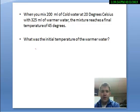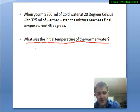Okay, when you mix 200 milliliters of cold water at 20 degrees Celsius with 325 milliliters of warmer water, the mixture reaches a final temperature of 45 degrees. What was the initial temperature of the warm water? So I look at this and I think it's going to be a two-part question. First I have to find this change in temperature, then I can use that to find its initial temperature. So I'm starting with this again: mass times change in temperature equals mass times change in temperature of substance 2.